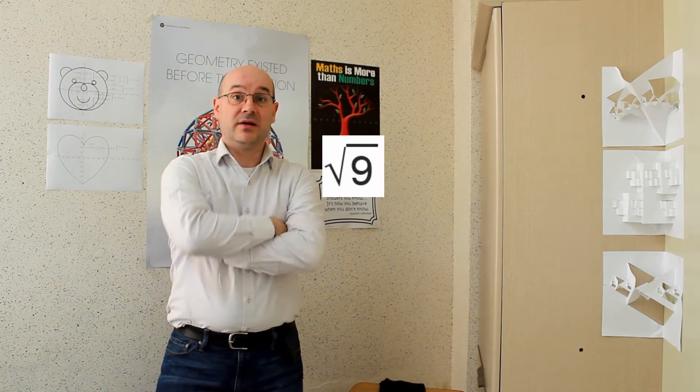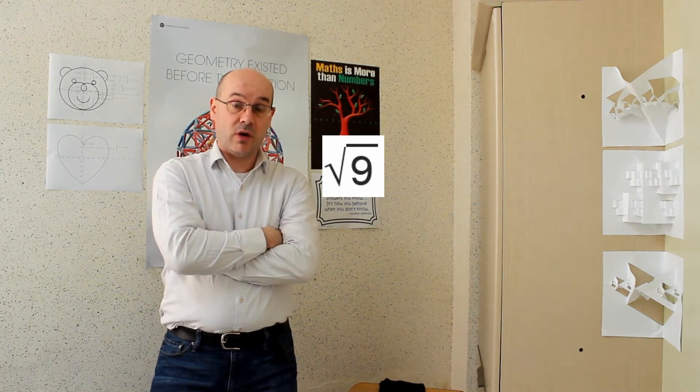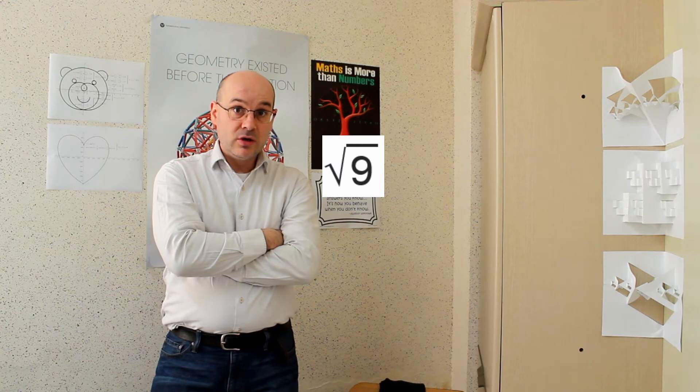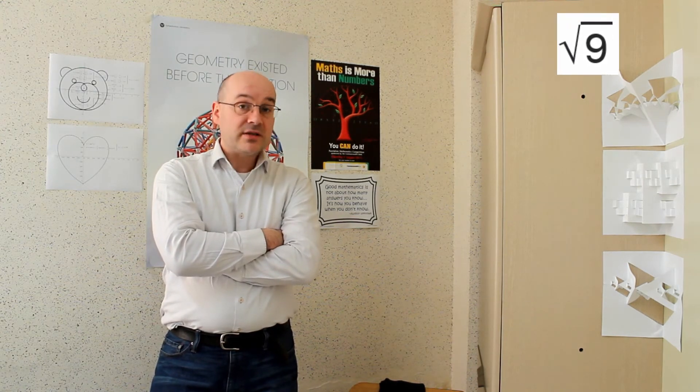So if you write radix 9, you can say that it is equal and only equal to 3 and not minus 3. That is the difference between the square roots of a number and the function principal square root of a number.